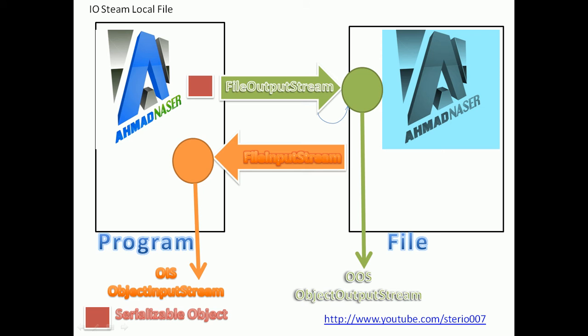We need another object which takes this FileOutputStream and writes it directly into the file. So we need OOS, which is the ObjectOutputStream. The ObjectOutputStream takes this FileOutputStream, and we write the object directly to the file using OOS.writeObject.